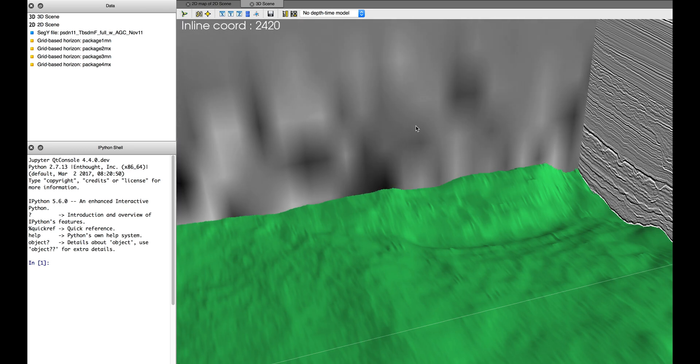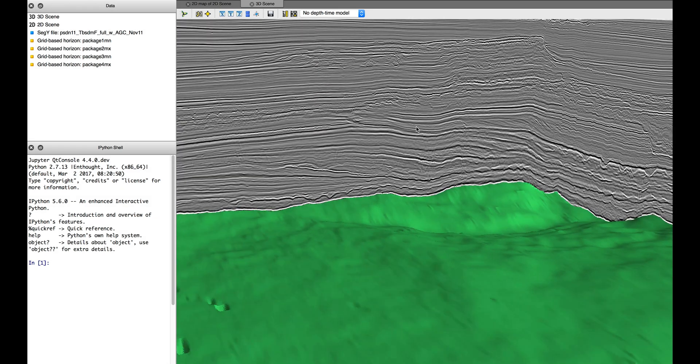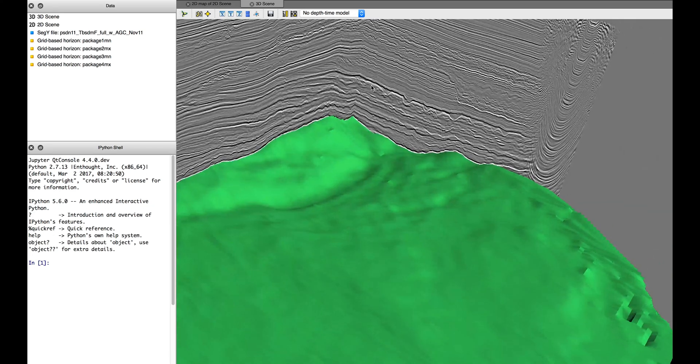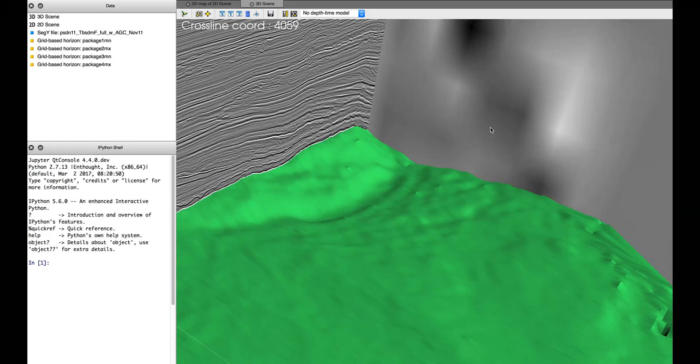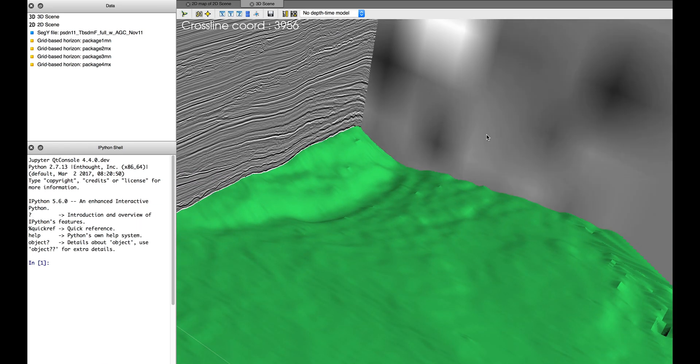What we see is a lot of very fine detail. We see channels and valleys in the data. This little bit over here where it's broken up is a salt dome, so we're not imaging that well.